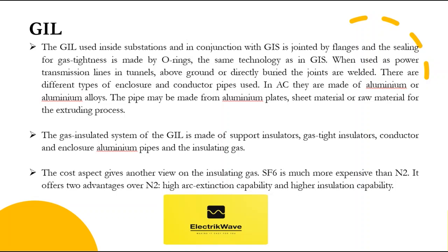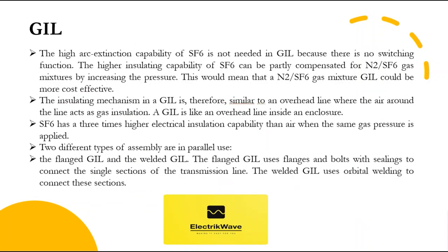The gas insulated system of the GIL is made of support insulators, gas-tight insulators, conductor and enclosure aluminum pipes, and the insulating gas. SF6 is much more expensive than nitrogen, but offers two advantages over nitrogen: high arc extinction capability and higher insulation capability. The high arc extinction capability of SF6 is not needed in GIL because there is no switching function. The higher insulating capability of SF6 can be partly compensated for by nitrogen or SF6 gas mixtures by increasing the pressure, making a nitrogen or SF6 gas mixture GIL potentially more cost effective. The insulating mechanism in a GIL is therefore similar to an overhead line where air acts as gas insulation — a GIL is like an overhead line inside an enclosure.